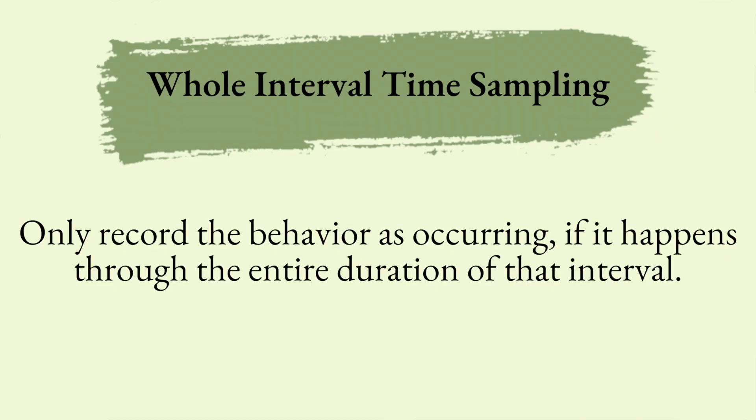Next we want to talk about whole interval time sampling. With whole interval time sampling you've got your chunk of time split into even-length intervals — similar to partial interval — but this is different because you only record the behavior as occurring if it happens through the entire duration of that interval. So if the interval is 30 seconds, it needs to be going on the whole time. If it only happens for 28 seconds it would be marked as a minus.